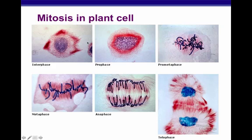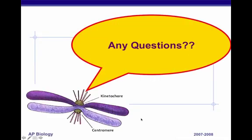Here's mitosis in plant cells — you can see all the phases. Notice the chromosomes stained dark being pulled apart in anaphase, lined up in metaphase, and in prometaphase as they're starting to line up. We'll look at these in class as well. That's the place to come for questions.